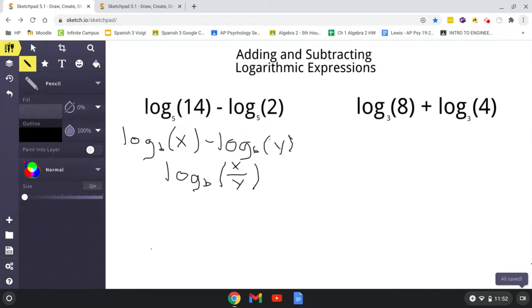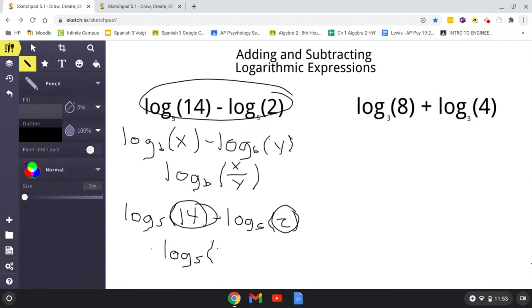So in this situation, it would be log base 5 of 14 minus log base 5 of 2, obviously what we have written right here. And you're just going to divide the 14 and the 2, and keep the same log base. So log base 5 of 14 divided by 2, which is 7. That's your answer right there.